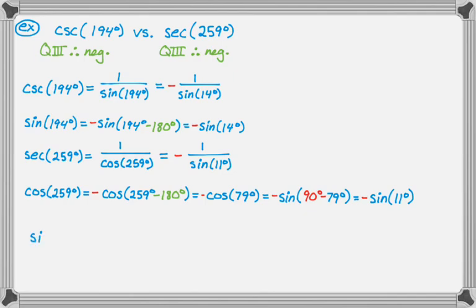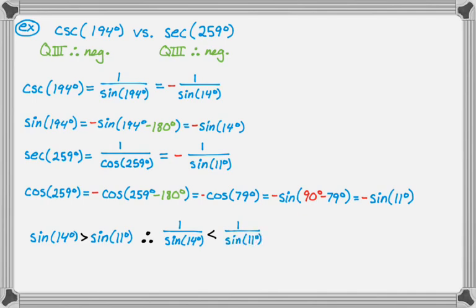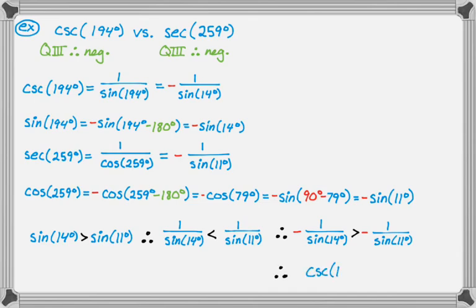Comparing: sine of 14 is greater than sine of 11. Taking reciprocals flips the inequality, then multiplying by a negative flips it again — a double flip — so the direction returns to greater than. Substituting back: negative 1 over sine of 14 is the cosecant of 194, and negative 1 over sine of 11 is the secant of 259. Therefore cosecant of 194 is greater than secant of 259.